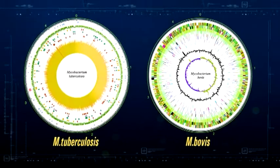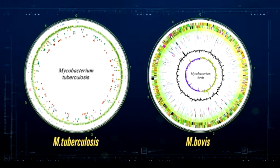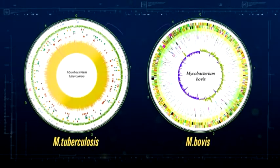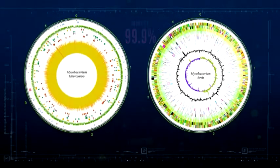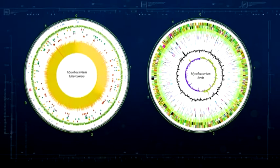Genome structure of pathogenic strains of mycobacterium tuberculosis and mycobacterium bovis is 99.9% identical and contains approximately 4,000 genes.